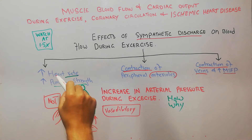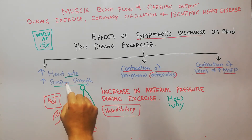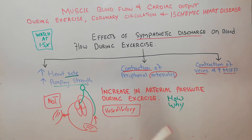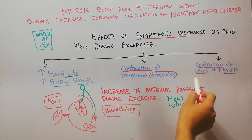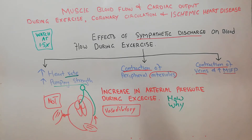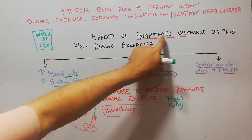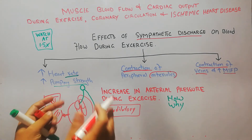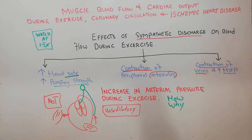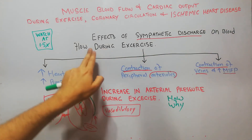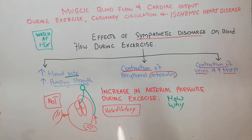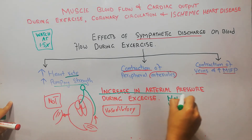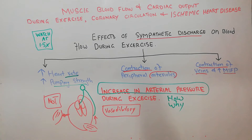The increase in heart rate, increase in pumping strength of the heart, contraction of the peripheral arterioles, and contraction of the veins — all these factors are due to sympathetic discharge or activation of the sympathetic nervous system. All these factors which are basically increasing blood flow during exercise are also contributing to the increase in arterial pressure.